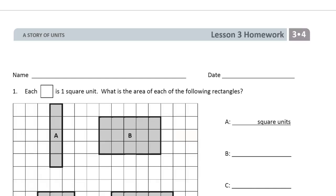Welcome to the homework. This is lesson three of module four for grade three. Please write your name here first. Each square is one square unit, so each one of these things here. What is the area of each of the following rectangles?